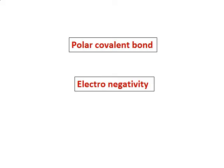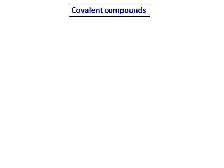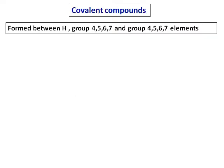After learning about the bond length and the bond strength, in this video you are going to learn about a polar covalent bond and the reason for polarity in a covalent bond: electronegativity. Let's do some examples of covalent compounds. A covalent bond is formed between two non-metals, or when hydrogen combines with group 4, 5, 6, or 7 elements.